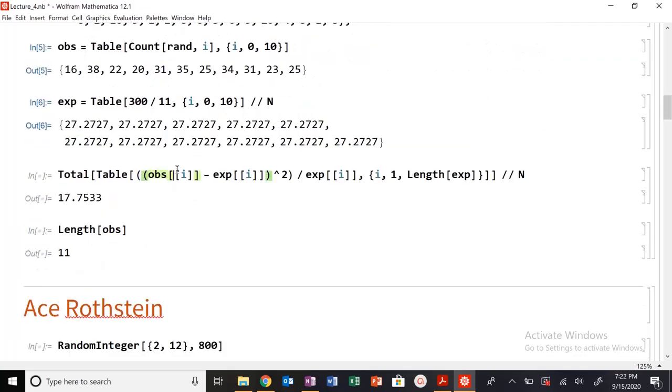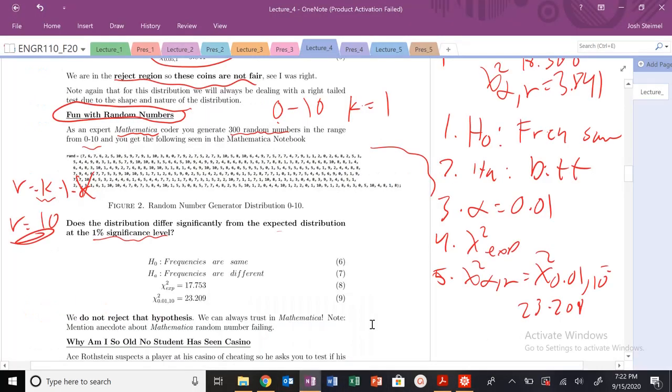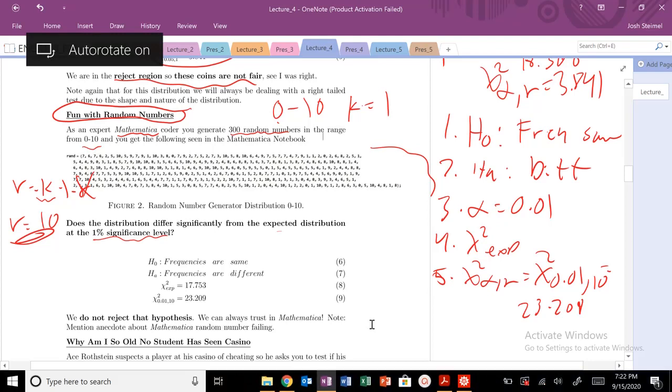I do my observed minus expected, chi-squared, and that's it. So my chi-squared experimental is 17.753. Let's go back.